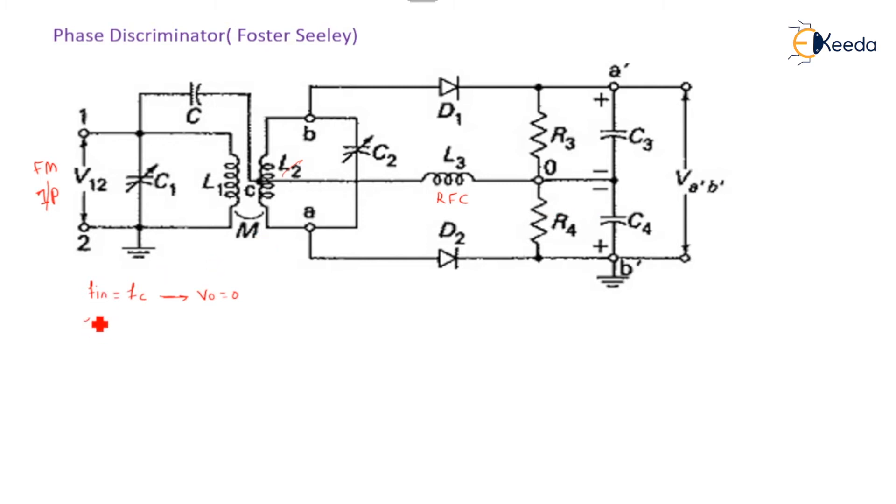Now, F_in second case, when F_in is greater than F_c, that time output voltage V0 is marching to the positive value.